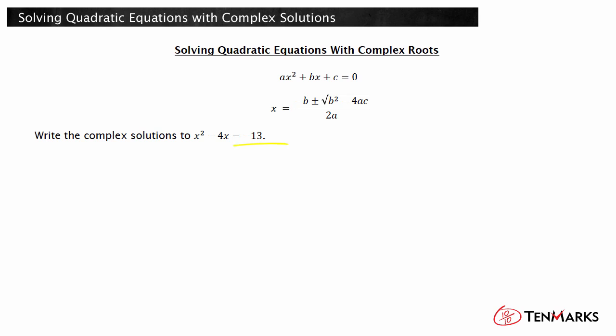The equation does not have zero on one side, so it is not in standard form. Add 13 to both sides to get the equation in standard form. The result is x squared minus 4x plus 13 equals zero.